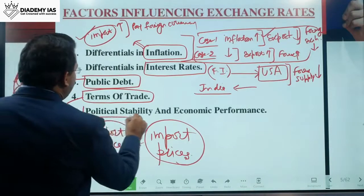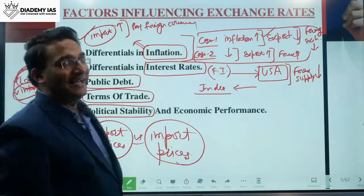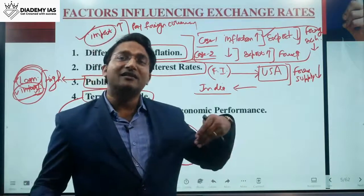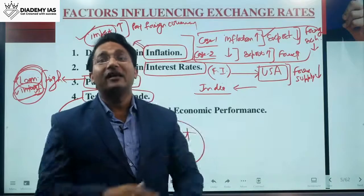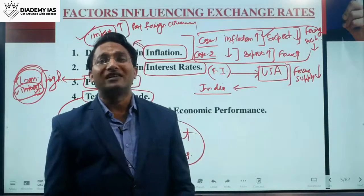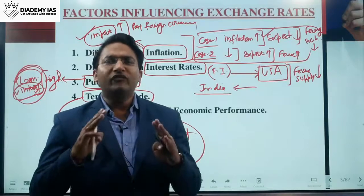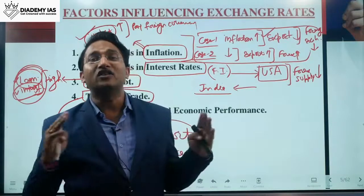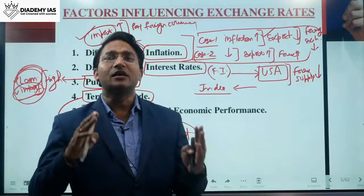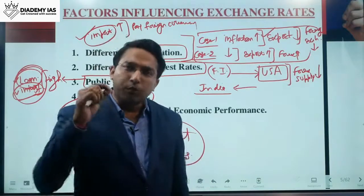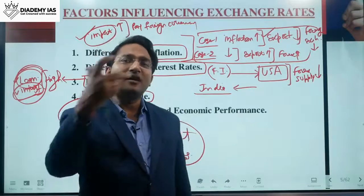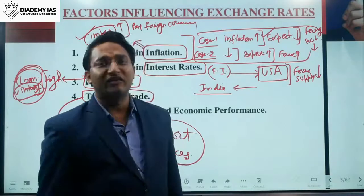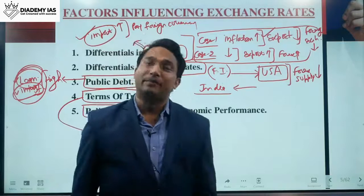The next factor is political stability. Consider two countries: one like India, which is comparatively stable, and another like Syria or Afghanistan, where there has been no stability for over 10 years. Foreign investors will clearly prefer to invest in politically stable India. In a politically stable country, more foreign exchange flows in, the supply of foreign currency increases, its value comes down, and the domestic currency appreciates.